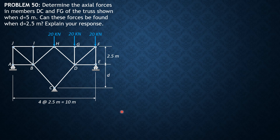First, let's put the reactions. The expected horizontal reaction Cx is expected to be zero because there is no inclined load. So that's supposedly part of the unknown reaction, but we expect zero horizontal reaction at C.